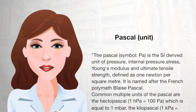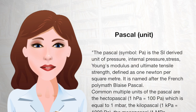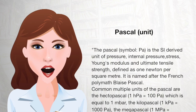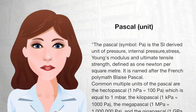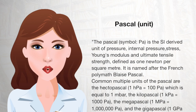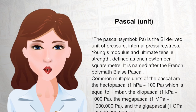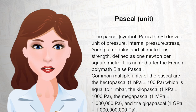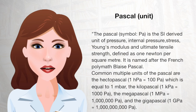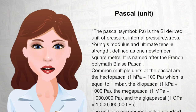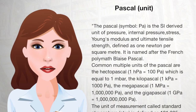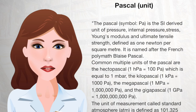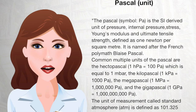The Pascal, symbol Pa, is the SI-derived unit of pressure, internal pressure, stress, Young's modulus and ultimate tensile strength, defined as 1 newton per square meter. It is named after the French polymath Blaise Pascal.